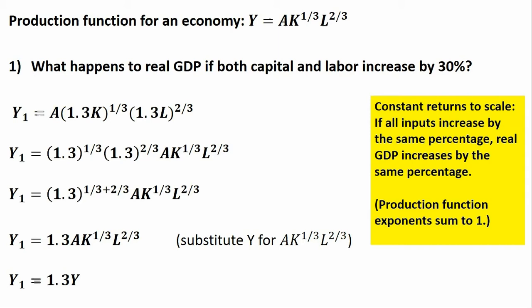Keep in mind that 1.3K is raised to the one-third power, and 1.3L is raised to the two-thirds power. We can factor out 1.3 to the one-third and 1.3 to the two-thirds power, bringing those out in front. Adding up these exponents, 1.3 raised to the one-third plus two-thirds power equals 1.3.